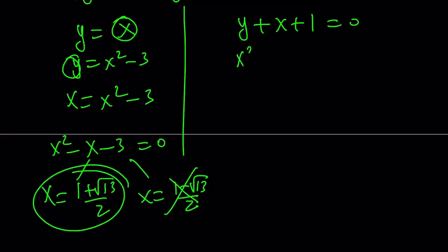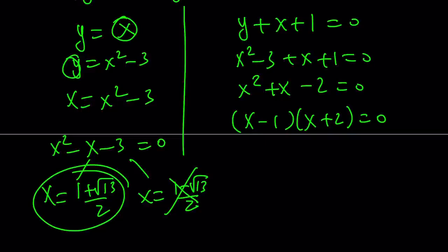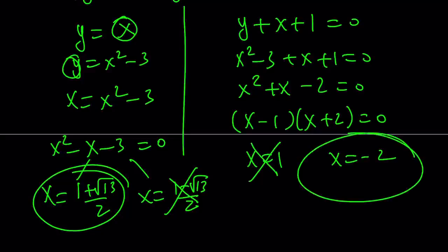From here we get the following. y is equal to x squared minus 3. So x squared minus 3 plus x plus 1 is equal to 0. x squared plus x minus 2 is equal to 0. Hey, the sum of coefficients is 0. So x equals 1 is a solution. But this is easy to factor. Come on, you can do it. x minus 1 times x plus 2 equals 0. Or quadratic formula. x equals 1. x equals negative 2. x equals 1 is extraneous. So we end up with x equals negative 2 as the other solution.